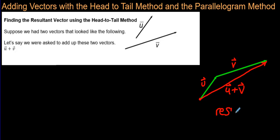In case you didn't hear me clearly, I'll just write that word there. This is the resultant vector right there in red.